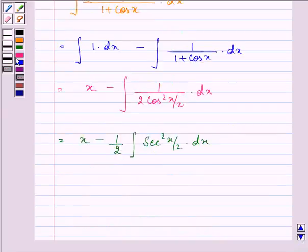And the integral of secant square x equals tan x by 2 divided by the derivative of theta, that is 1 by 2, plus c.